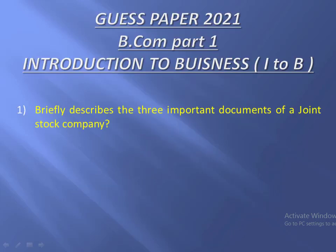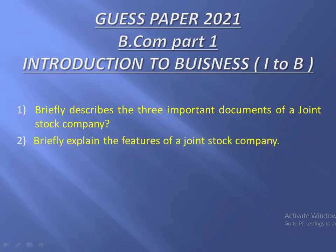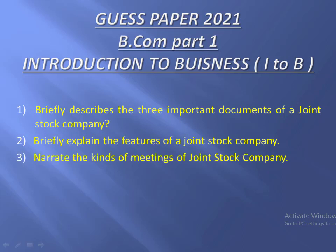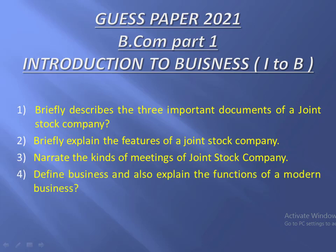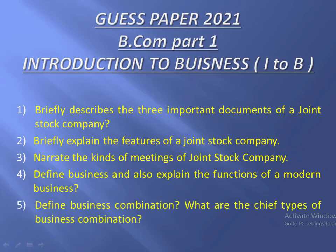इसमें पहला question है: Briefly describe the three important documents of a giant stock company. दूसरा question है: Briefly explain the features of a giant stock company. Question number three: Narrate the kinds of meeting of giant stock company. Question number four: Define business and also explain the functions of a modern business. Question number five: Define business combination — what are the chief types of business combination?